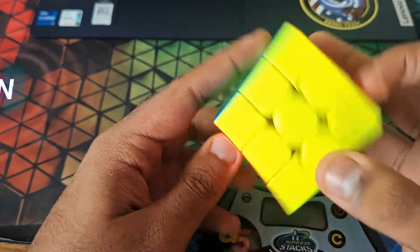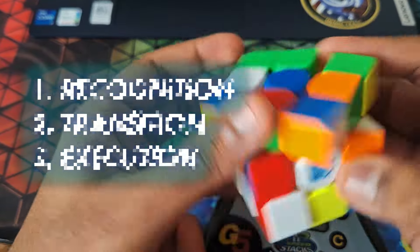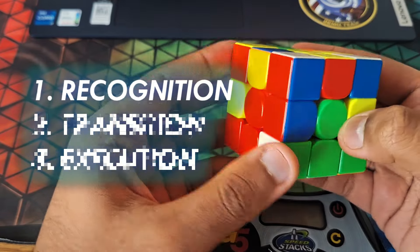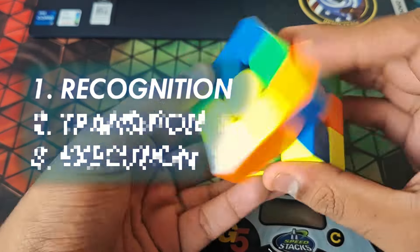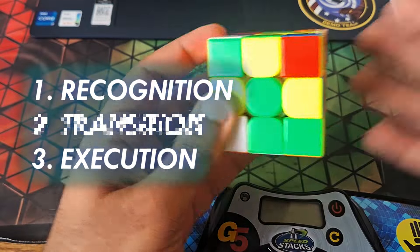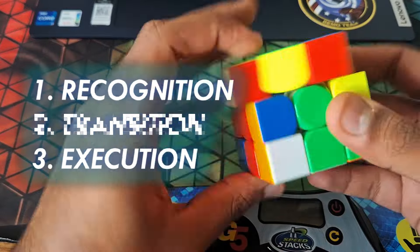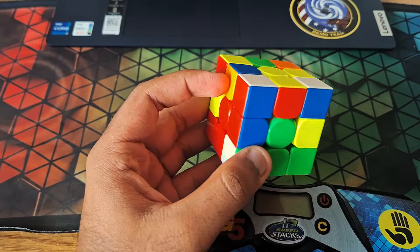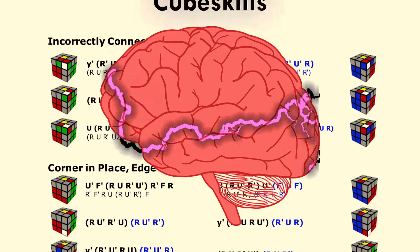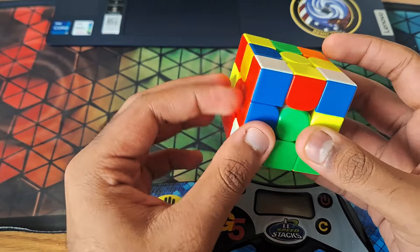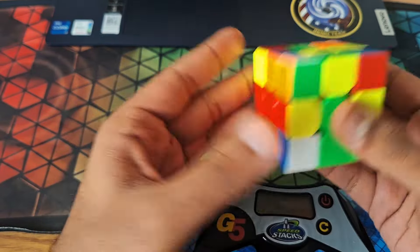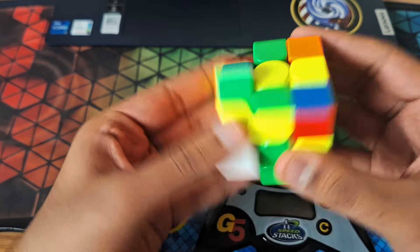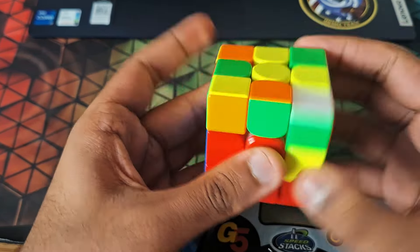When doing an F2L pair, there are three steps that your brain takes to execute it. First, your brain recognizes the pair—knowing the position of the corner as well as the position of the edge. The last step is obviously executing the case, doing the moves necessary to solve the F2L pair. But the second step is connecting part 1 to part 3. Your brain requires a split second to connect the information of the position of the F2L pair with the algorithm needed to execute it.